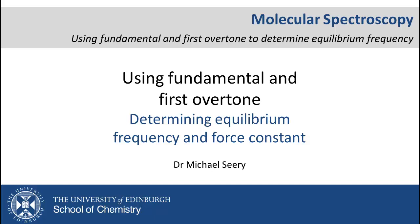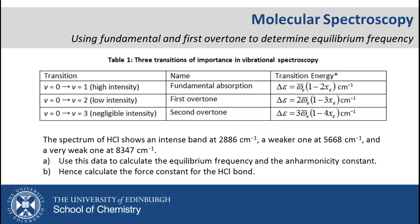While vibrational state selection rules allow for a change in vibrational state of plus or minus 1, 2, 3, etc., in practice typically only the first three are observed, and these of decreasing intensity. These three transitions are known as the fundamental absorption, first overtone, and second overtone respectively.